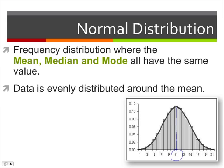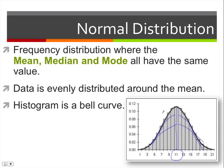The data is evenly distributed about the mean. So everything on this side mirrors everything on this side, and if we were to draw a histogram of all of this — so these bars right here would be a histogram — it would form this bell curve looking thing right here.